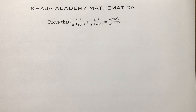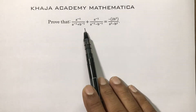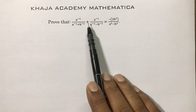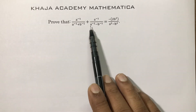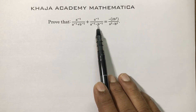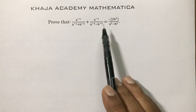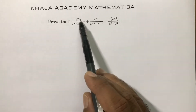Class 9 real numbers: prove that a⁻¹ divided by (a⁻¹ + b⁻¹) plus a⁻¹ divided by (a⁻¹ − b⁻¹). Here we have all the powers as minus 1.